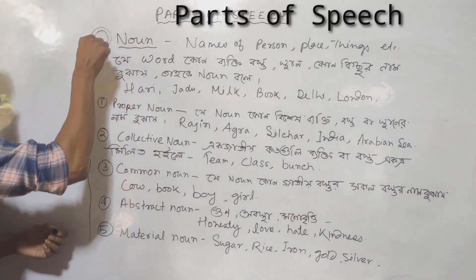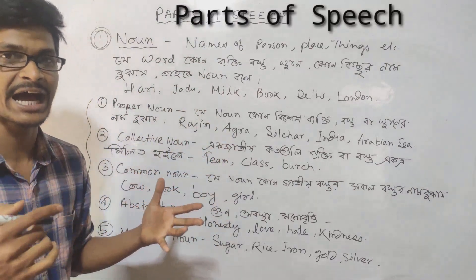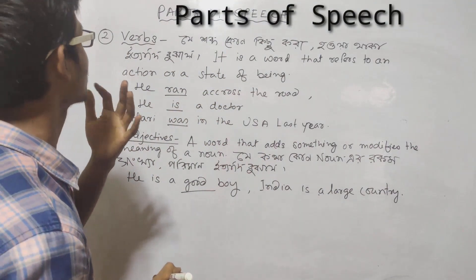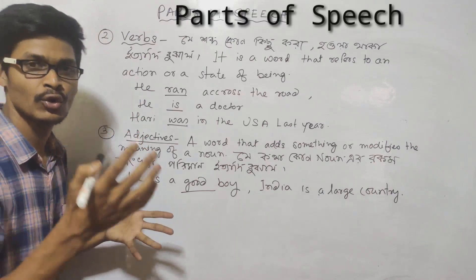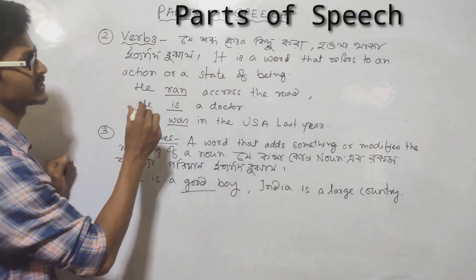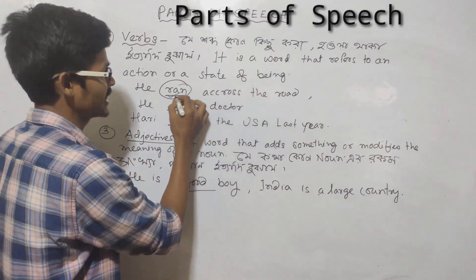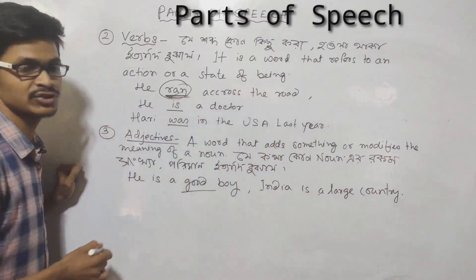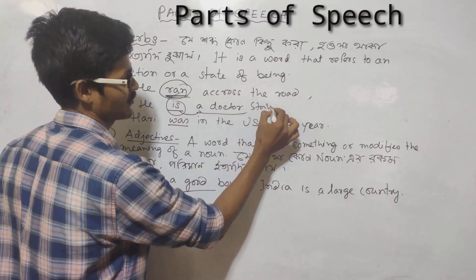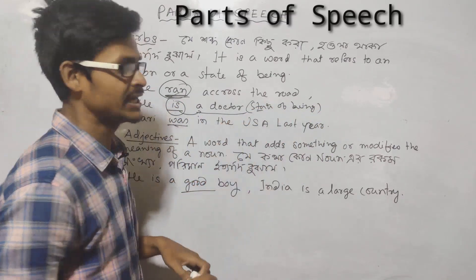Now we will look at the verb. The noun is followed by the verb. The verb is the action word — 'kriya' in Bengali. A verb refers to a state of being or an action. For example, 'it ran across the road' — 'ran' is the verb. The verb describes what something does or is.